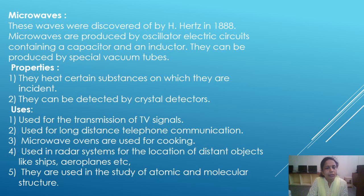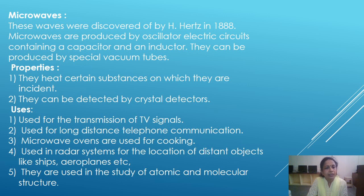Next, microwave waves. These waves were discovered by scientist Hertz in 1888. Microwaves are produced by an oscillator electric circuit containing a capacitor and an inductor. They can also be produced by special vacuum tubes. Properties: They heat certain substances on which they are incident, and they can be detected by crystal detectors.